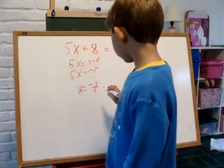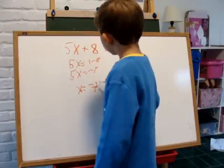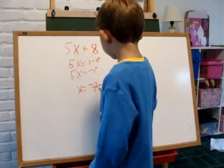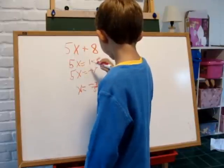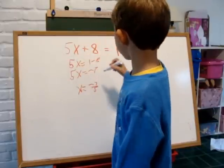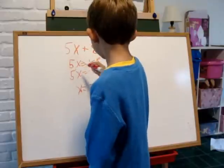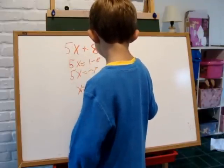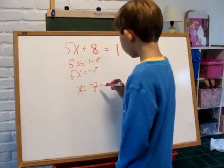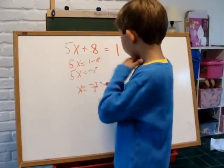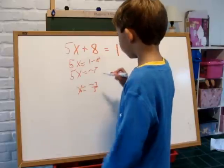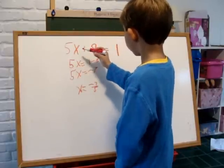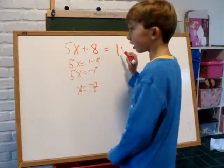And in order to check it, we plug in negative 7 fifths as x. So we get 5 times negative 7 fifths equals negative 35 fifths, which divides to negative 7. And negative 7 plus 8 equals 1.